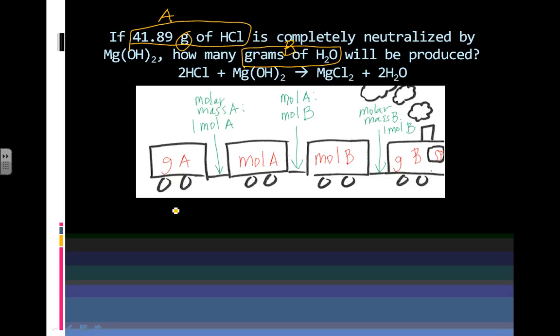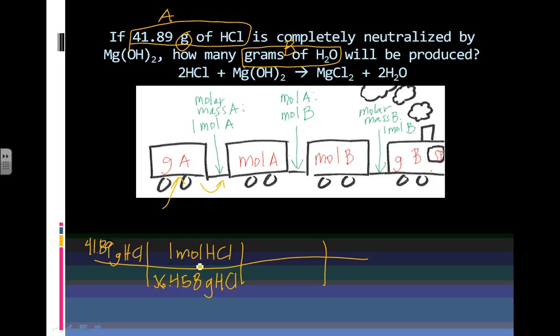I'm given grams of HCl. So I'm going to start in this cart here. I'm going to have several steps to go through. I'm going to start with what I'm given, 41.89 grams of HCl. Well, the next step I have to go through here is the molar mass of A over 1 mole of A. Well, since grams of HCl is on top, it's going to have to be on the bottom here. So the molar mass is going to have to be on the bottom. And 1 mole of HCl is going to have to be on top. When I calculate the molar mass of HCl, I get 36.458.